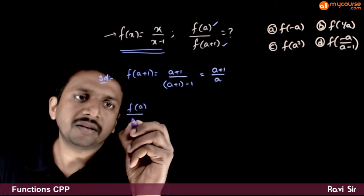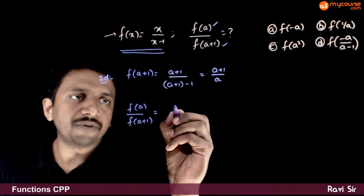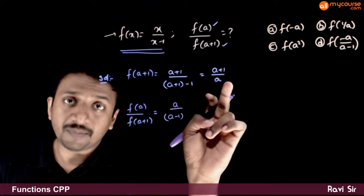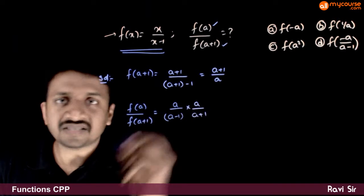What is f of a by f of a plus 1? f of a is a by a minus 1 divided by this, that is, times a by a plus 1.